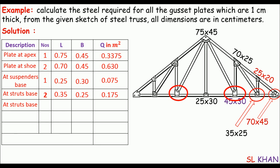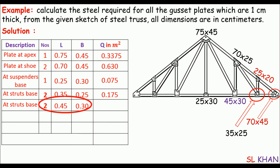The second type of truss base plate: there are also two of these, with a size of 45×30 centimeters. Multiplying these three things gives a quantity of 0.270 square meters.